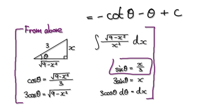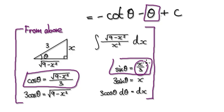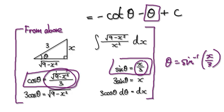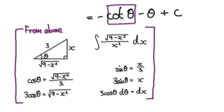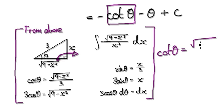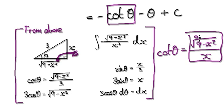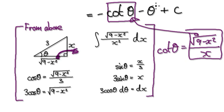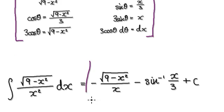Going back to when we first created the triangle — we can replace θ by taking the inverse. Theta equals inverse sine of x over 3. For cotangent of theta, going back to the triangle: cotangent equals adjacent over opposite, which is √(9 − x²) divided by x. We can now replace both theta and cotangent in our answer, giving us the final answer in terms of x.